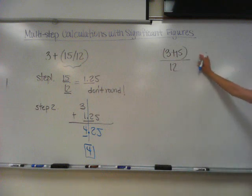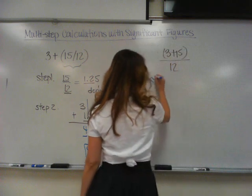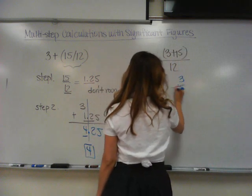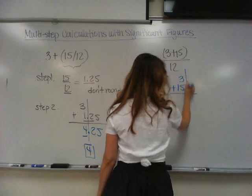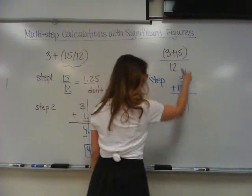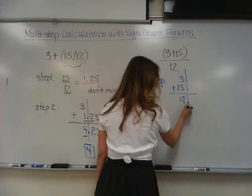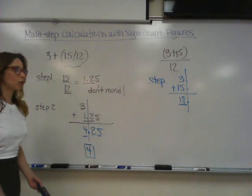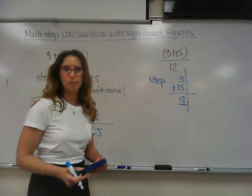Let's go to the other one. What should I do here first? The parentheses: 3 plus 15. They both go up to a ones place, so we draw our line there. You get 18. Underline the digits to the left of the line because they are significant.